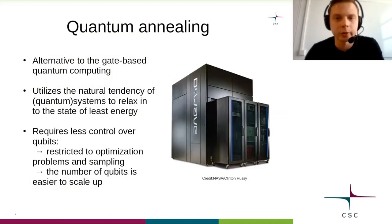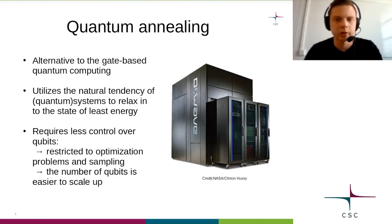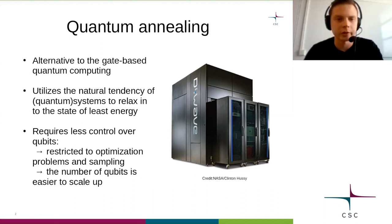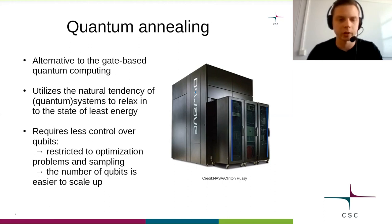In the last webinar we discussed quantum computing in general, but mainly from the point of view of the so-called gate model universal quantum computers. The gates refer to distinct operations that are performed one after another to the quantum computer. Universal means basically that the computer can do any kinds of calculations like the computers we are used to. Quantum annealers are different from the gate based quantum computers in that they only perform one kind of calculation. Normal computers and gate model quantum computers run algorithms to solve problems, but quantum annealers actually let the nature solve the problem for them.